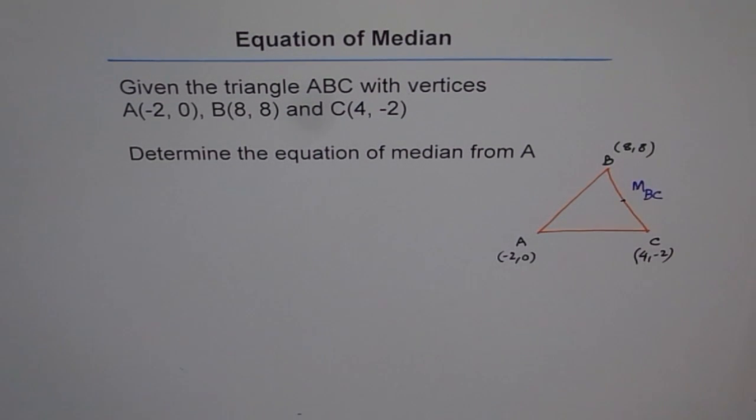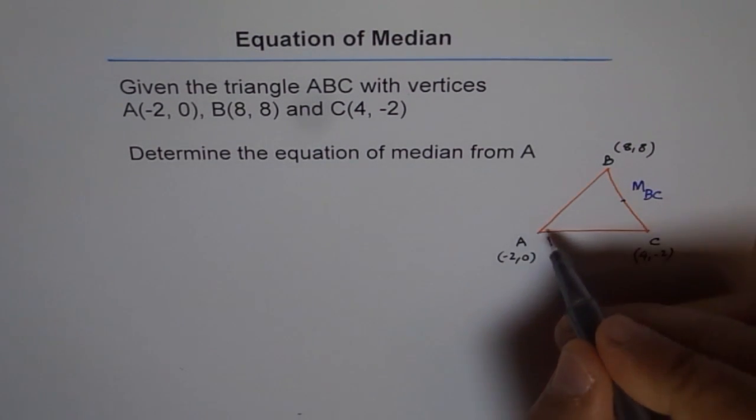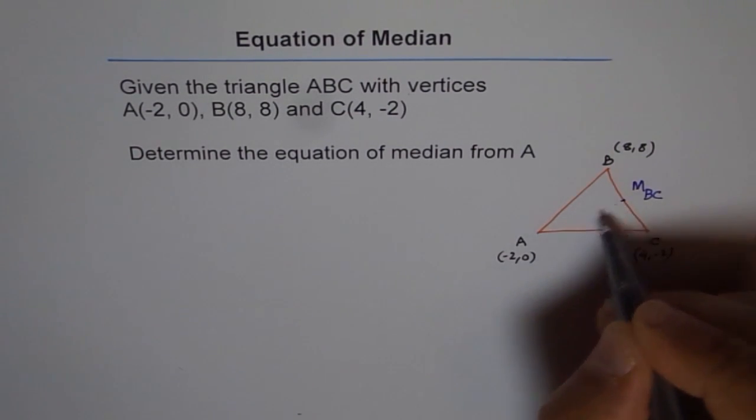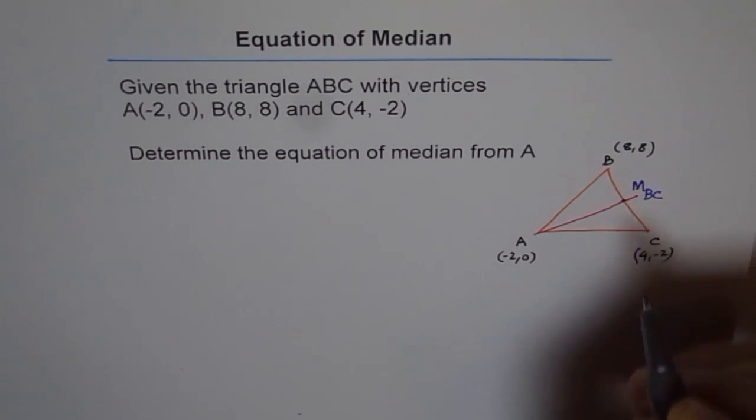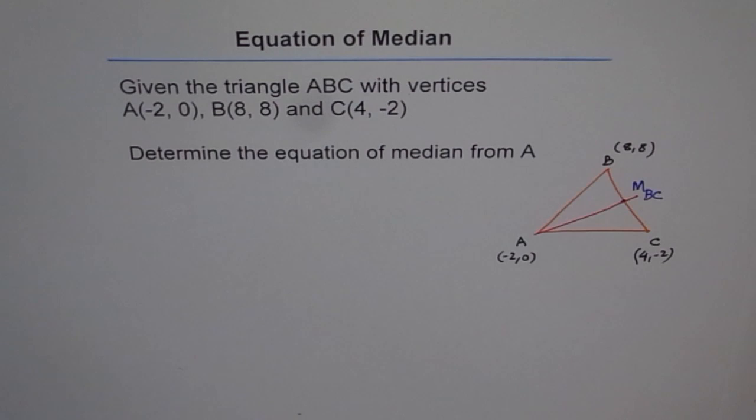And I'll call this midpoint as midpoint of BC. So I'm calling it M_BC, correct? Now my median will be a line from vertex A to the midpoint. So that is my line. So I'll just draw a line here going through my median. And I'm interested in finding equation of this line, which goes from the vertex to the midpoint of BC.